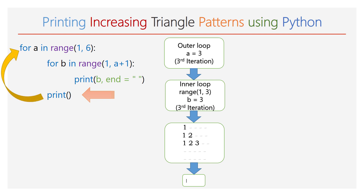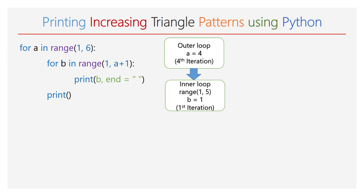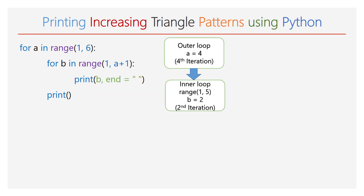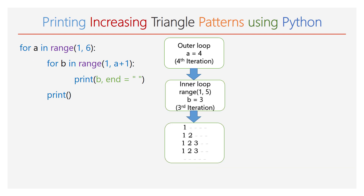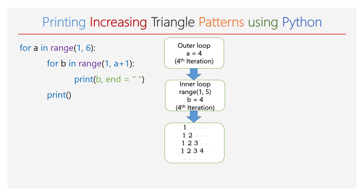The execution goes to the first line again. The value of a will be 4. The range of b will be 1 to 5, and the inner for loop will iterate for 4 times. During each iteration, b is printed: first iteration b=1, second iteration b=2, third iteration b=3, and fourth iteration the value of b will be 4, so we are going to print 4.